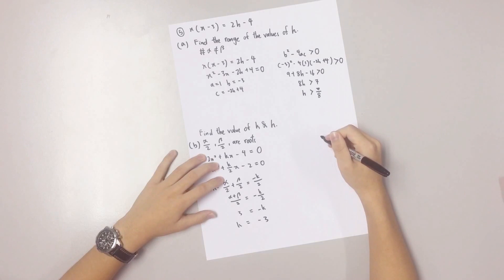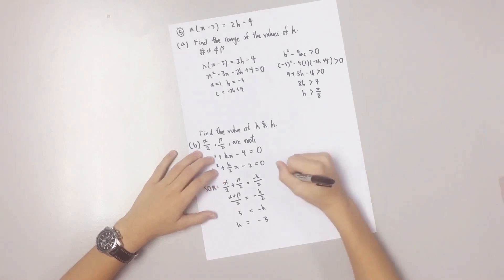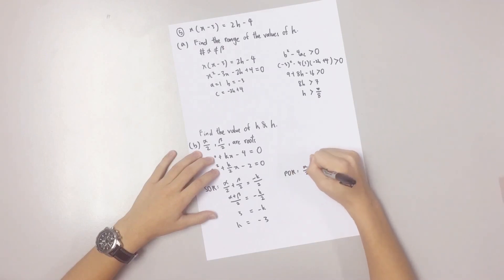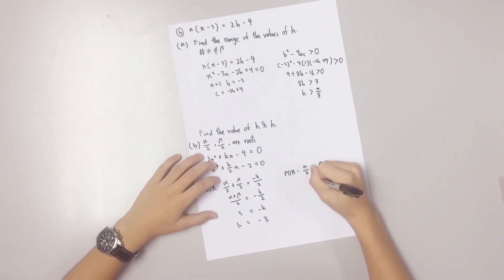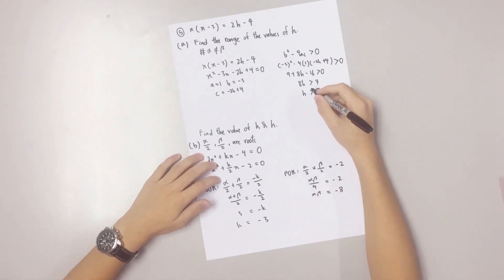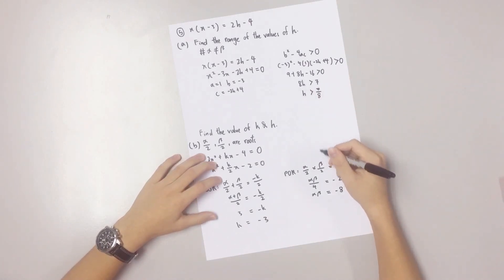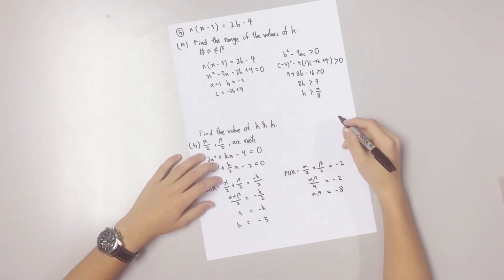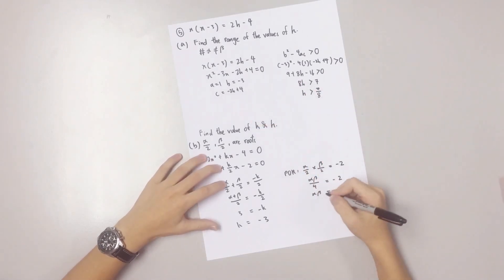To find K, we use the product of roots. Based on part A, we know that the product of the roots alpha and beta is negative 2H plus 4. So we substitute it in and simplify it to get the value of H.